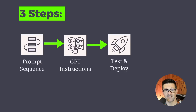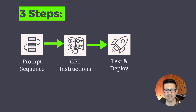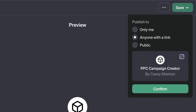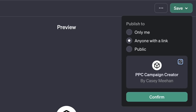Now we've walked through that complete step-by-step process — I'll link to that custom GPT in the description. The steps we went through: prompt sequence, created the instructions, and tested it. To deploy it, you can share it publicly so anyone can find it, share it with only people that have the link, or keep it private just to yourself.